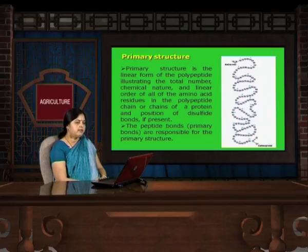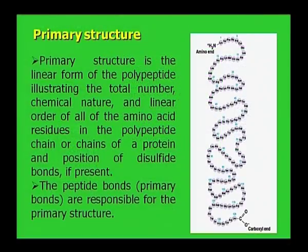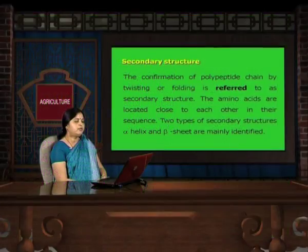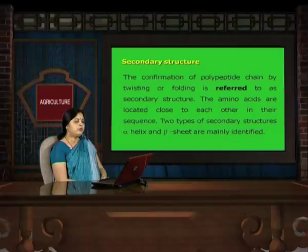We will start with the primary structure of the protein. Primary structure is the linear form of the polypeptide chain. This structure determines the number of amino acids, the chemical nature of the amino acids, the sequence of amino acids in a polypeptide chain, and the position of disulfide bonds present in the polypeptide chain. These peptide bonds are responsible for the primary structure.